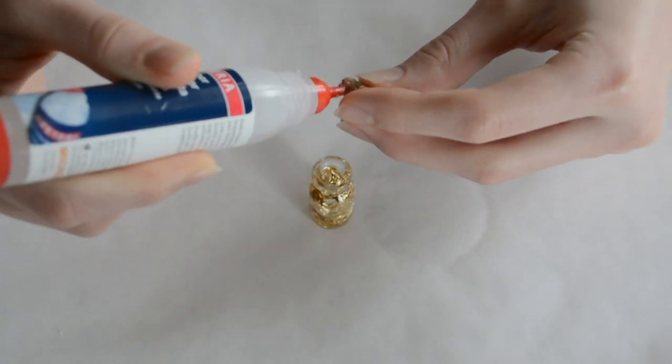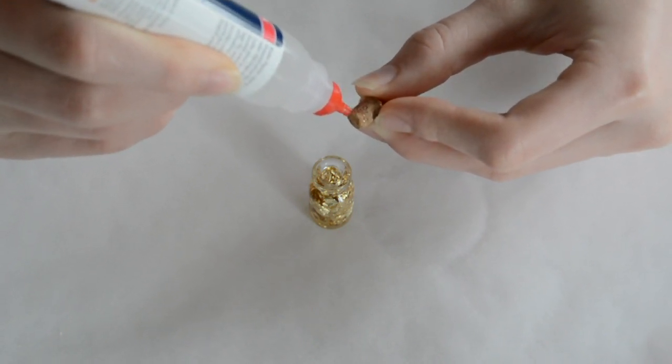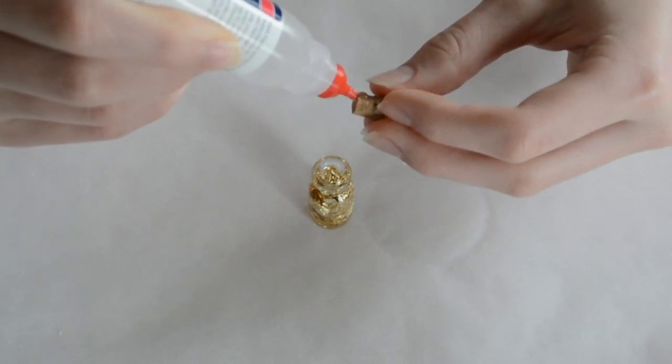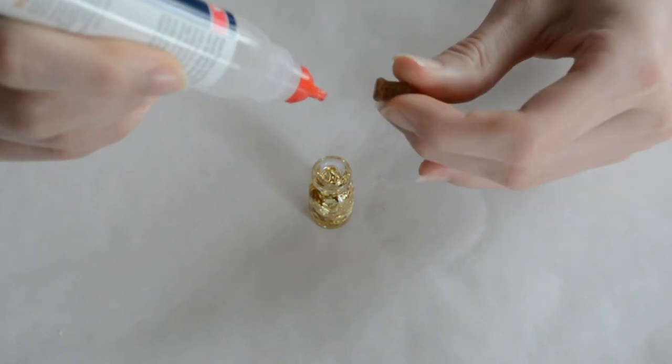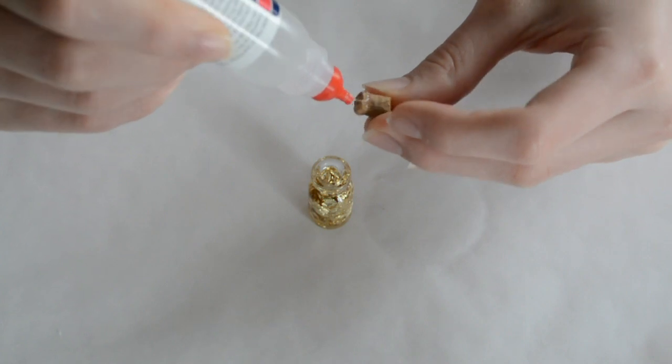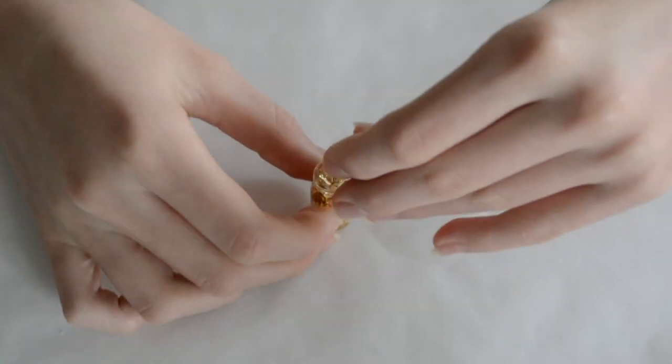To finish up your bottle, just take the cork and some strong glue, and then just add some of the glue all around the cork and just press it into the bottle. You don't really have to let it dry, but it will automatically, and then it should be nice and secure.